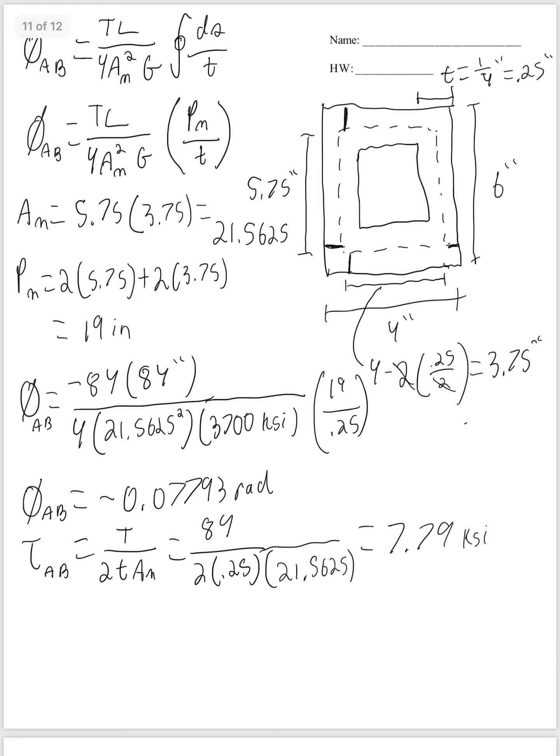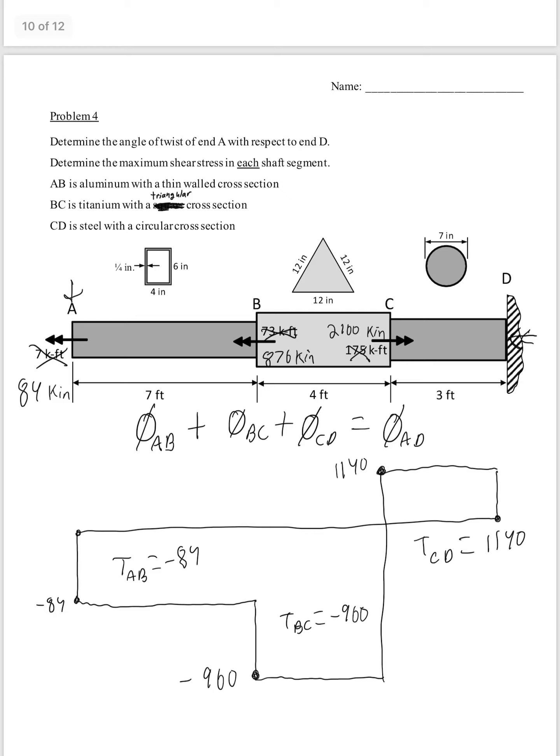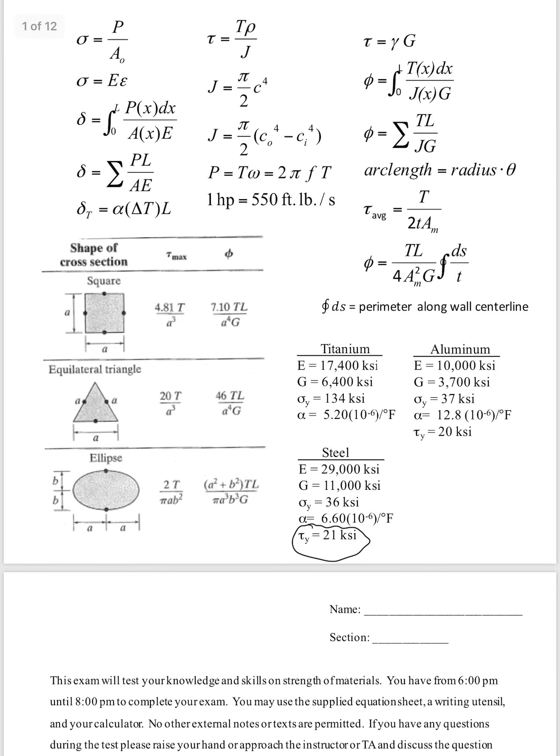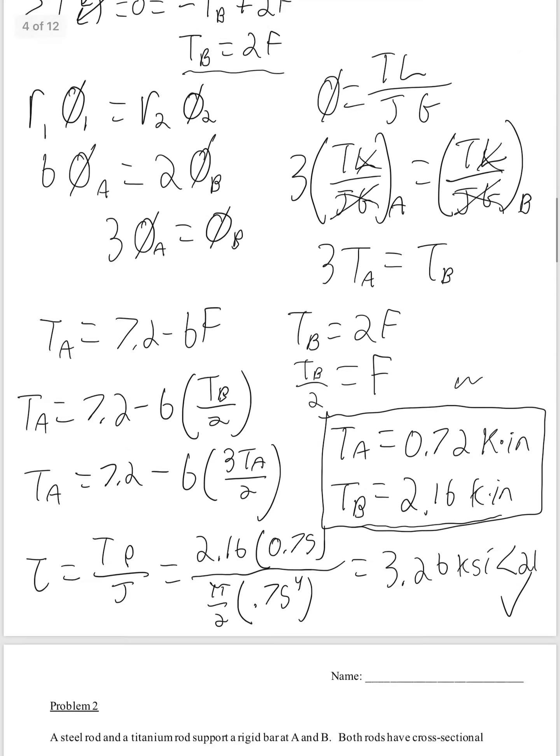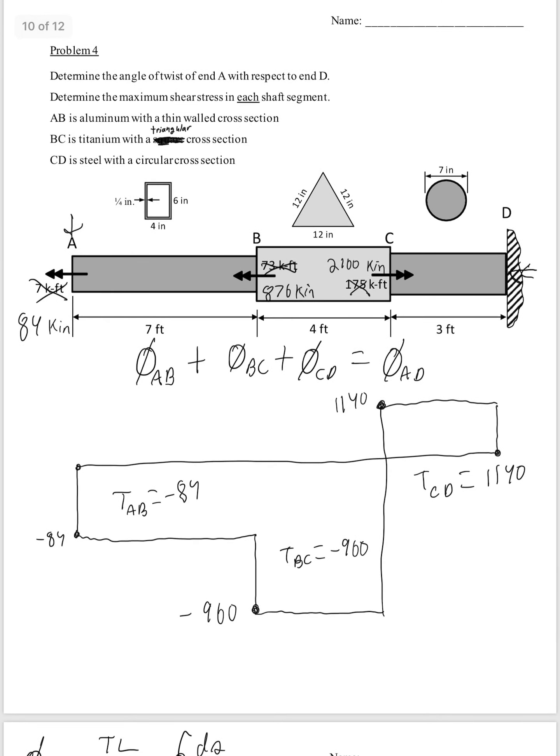So we've got angle twist AB and shear AB. So now we'll go ahead and do the same thing for BC. Triangular cross-section. So those formulas are given to you on your formula sheet. If you go up here, it's right here. And note that that A, there, and there, is the length of one of the sides, not the area.